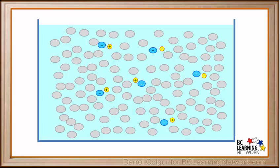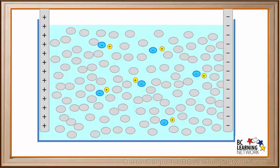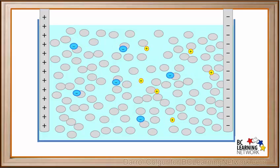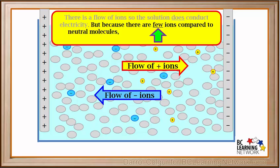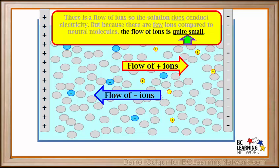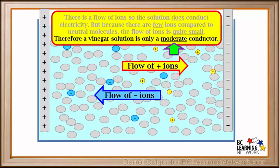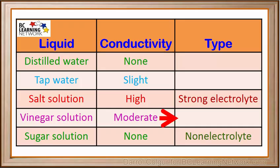Vinegar solution is mainly neutral molecules with only a small number of positive and negative ions present. When positive and negative probes from our conductivity tester are dipped into a vinegar solution, the negative ions move toward the positive probe, and the positive ions move toward the negative probe. There is a flow of ions, so the solution does conduct electricity. But because there are few ions compared to neutral molecules, the flow of ions is quite small. Therefore, a vinegar solution is only a moderate conductor, and we call it a weak electrolyte.